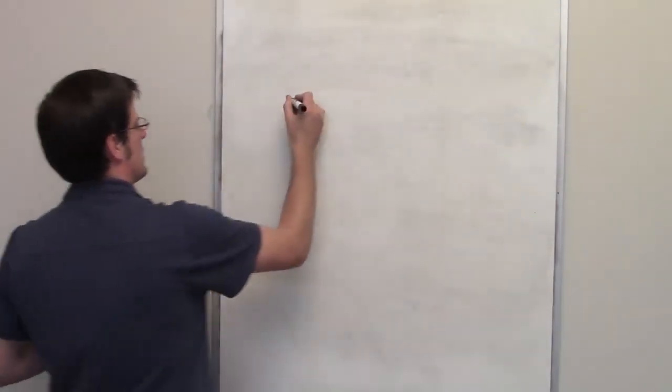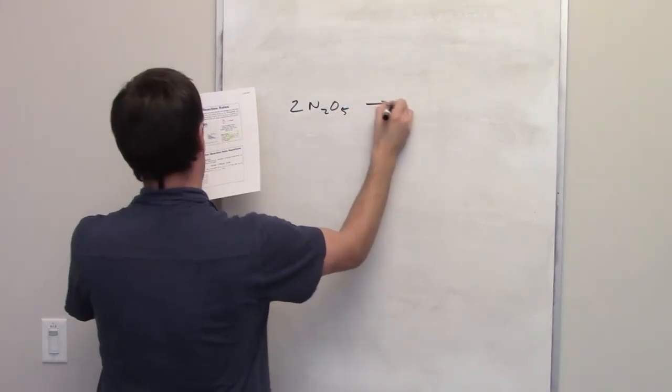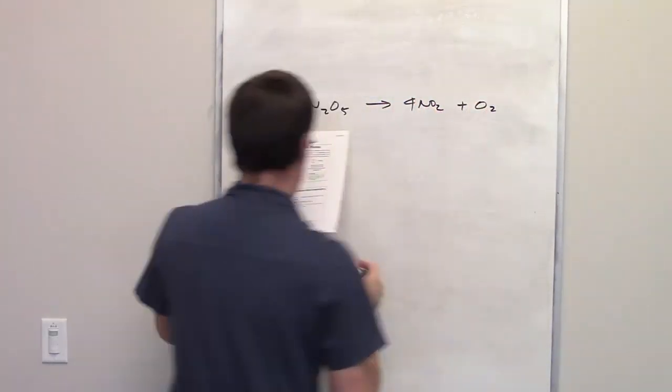In this question, we're given this chemical equation: 2 moles of dinitrogen pentoxide forming 4 moles of nitrogen dioxide plus O2 gas.